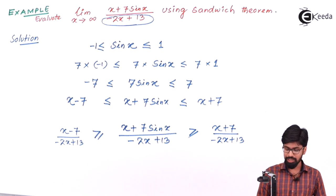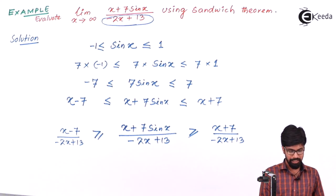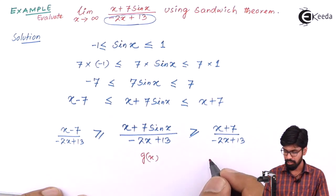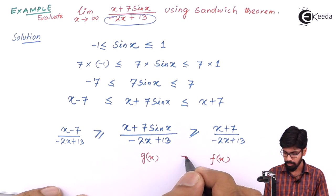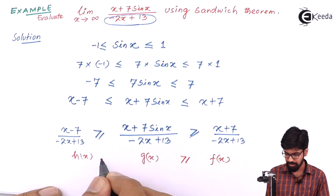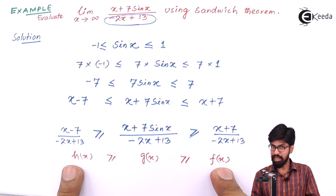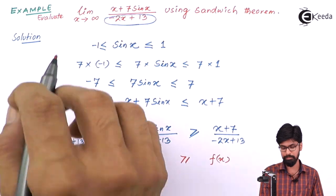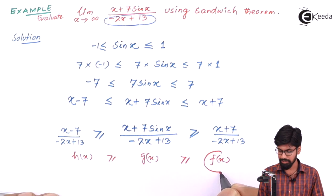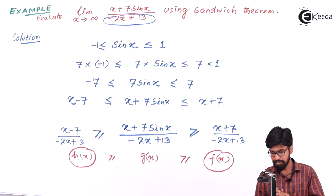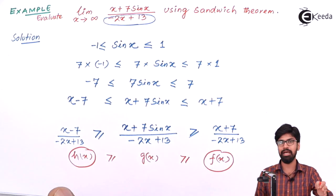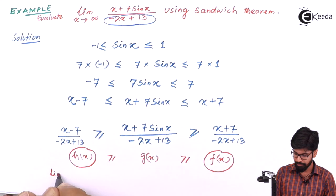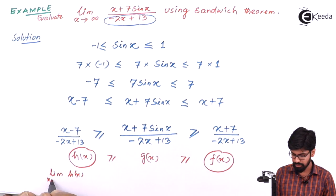Now, what does the Sandwich Theorem say? The Sandwich Theorem says: if g(x) lies between f(x) and h(x), and the limit of these two bounding functions at a fixed point — here as x approaches infinity — is the same, then g(x) also possesses that same limit.